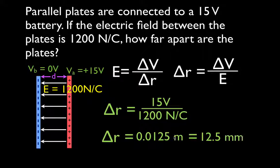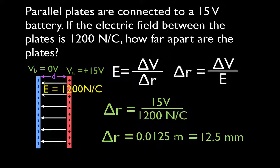The distance between the plates is 0.0125 meters, which we can convert to millimeters — that's 12.5 millimeters. So that is how we use that equation for a simple problem to calculate the separation between plates when we have parallel charged plates and therefore a uniform electric field between them.